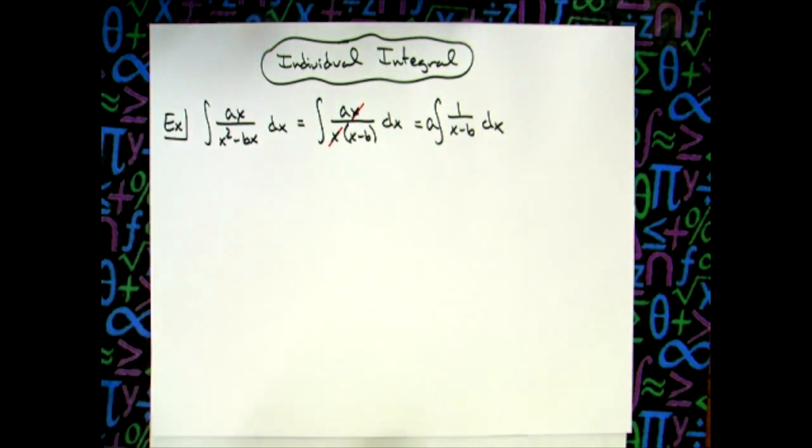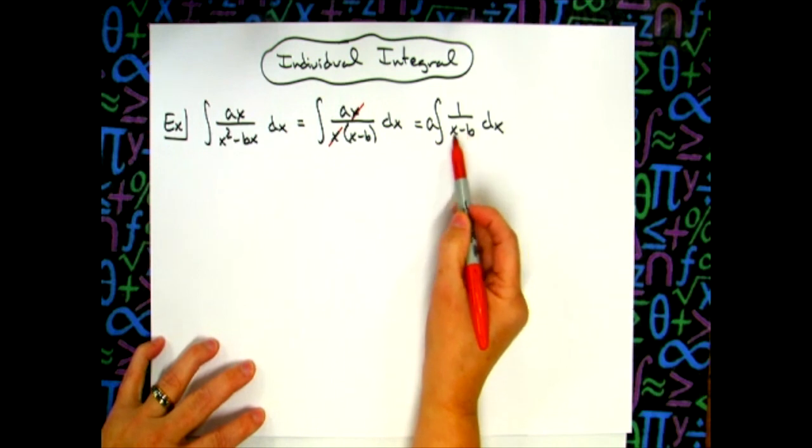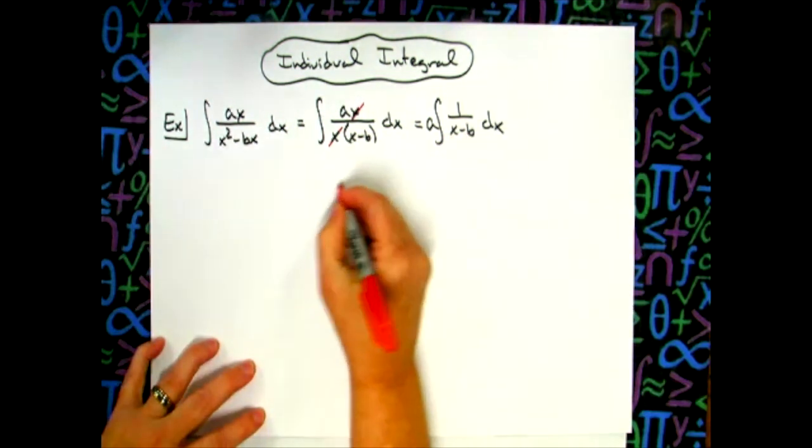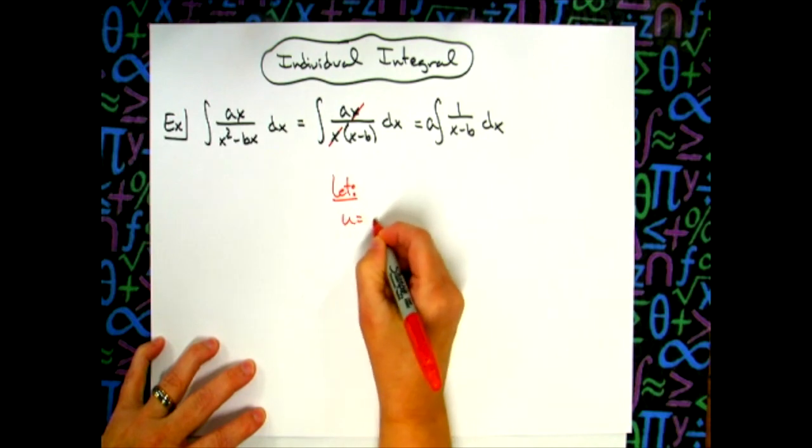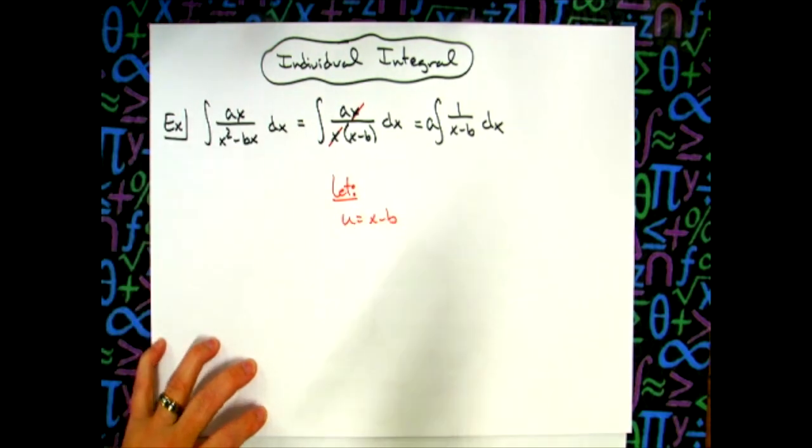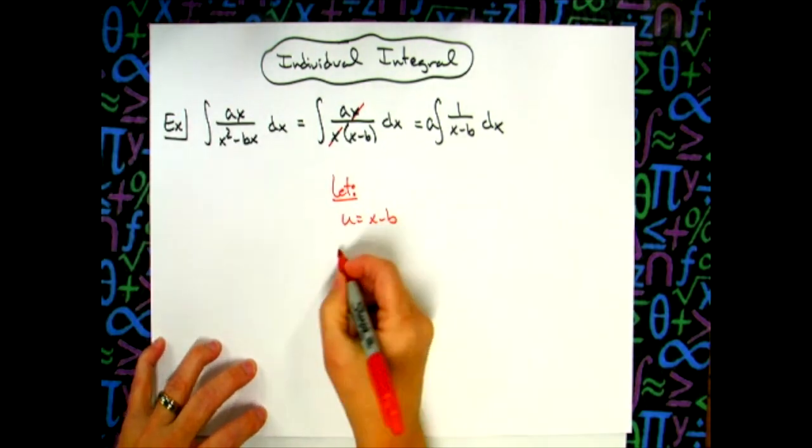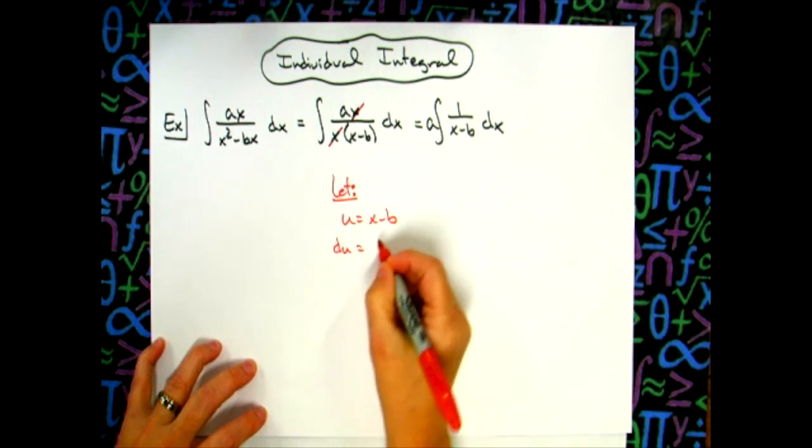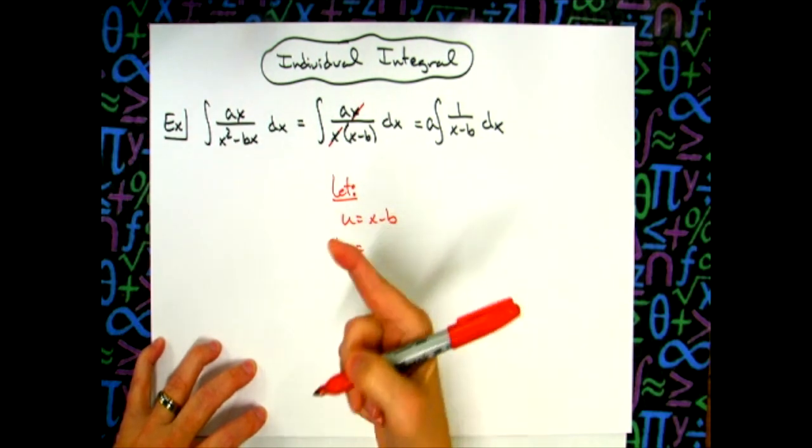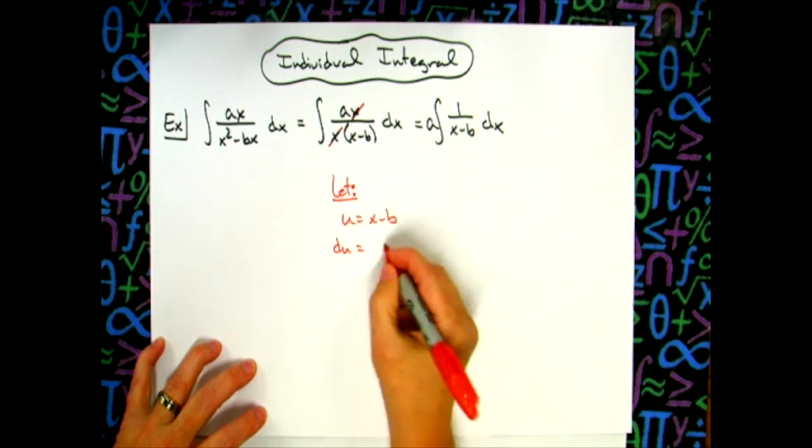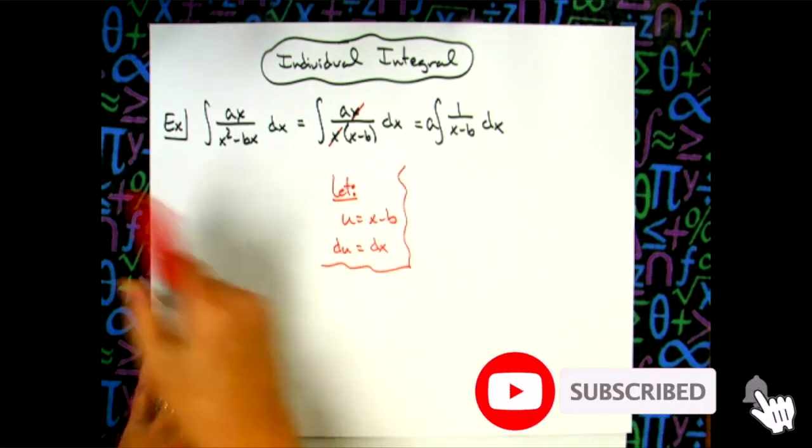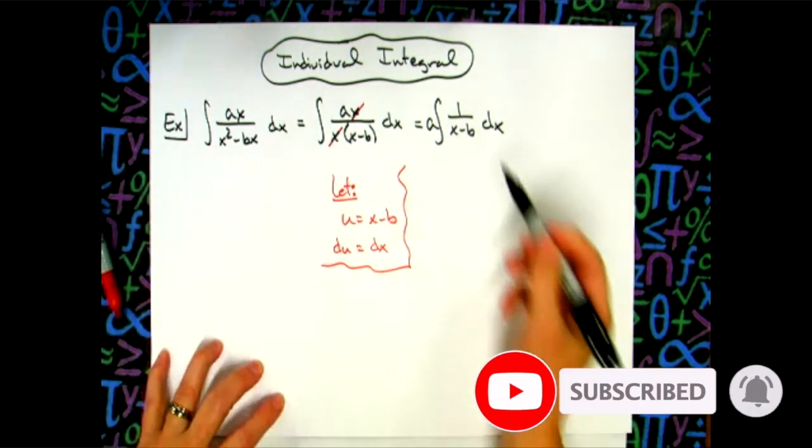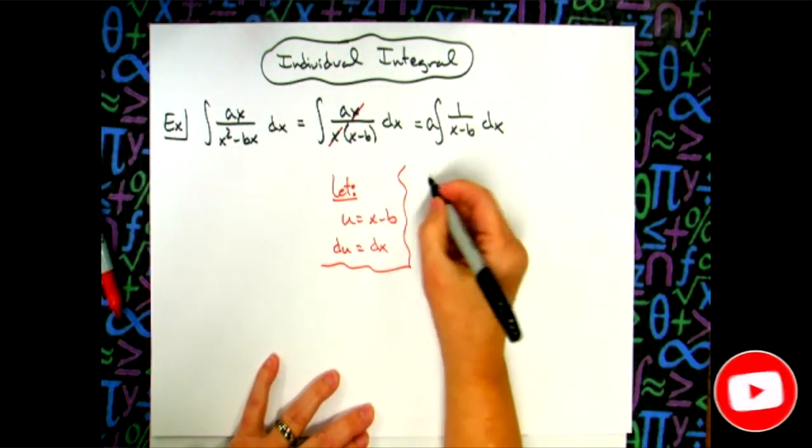At this point, I want to go to a u-substitution, and I'm going to let my u be that bottom denominator. So I'll let u equal x minus b. I'll take the derivative of both sides, so du equals the derivative of x, which will be one. This is a constant, so I'll just have dx on this side.